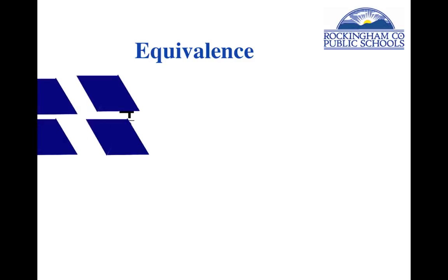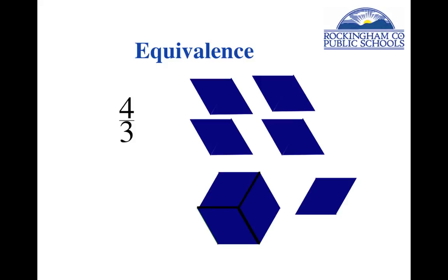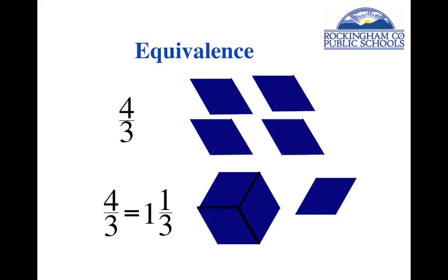Here's another equivalence: four thirds. Grab four of the blue rhombuses — the denominator of three tells us it's a blue rhombus, and the numerator of four tells us to get four pieces. If I rearrange these, that makes one whole and one rhombus left over — that's one and one third. I'm not teaching students to divide the top number by the bottom number yet; I'm just showing that this is an equivalence and making students realize that a shape can have multiple names.